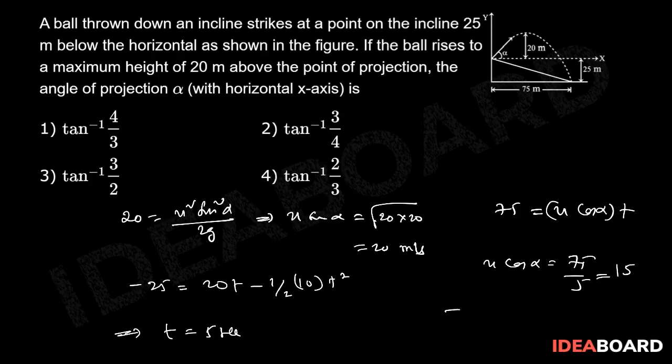Therefore, tan α = 4/3, so α = tan⁻¹(4/3). So one is the correct option.